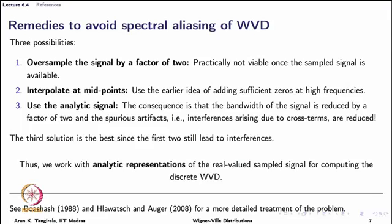This is a bright idea because the moment I construct the analytic associate of a signal, I would be reducing the bandwidth by a factor of 2. Recall that whenever I construct an analytic associate of a given signal, I am going to zero out all the negative frequencies, which immediately brings down the bandwidth by a factor of 2. Because I am bringing down the bandwidth of the signal by a factor of 2, multiplying by 2 now for the analytic signal gives me the same sampling frequency at which I have already obtained the data. Therefore, I do not have to do any resampling, oversampling, or interpolation. The analytic signal will reduce the bandwidth, whereas the previous two remedies are not touching the bandwidth but trying to address the sampling frequency itself.